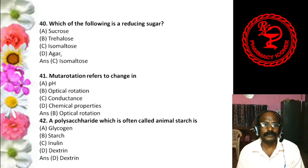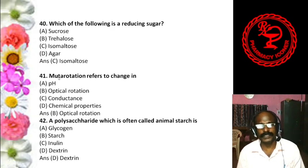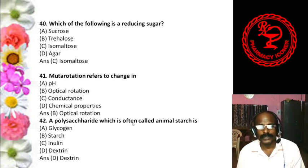Question 4: Triosugar is — A. Glycerose, B. Ribose, C. Erythrose, D. Fructose. The answer is A, Glycerose. Question 5: The pentosugar present mainly in the heart muscle is — Lyxose, Ribose, Arabinose, or Xylose. The answer is Lyxose. Very important: the heart muscle contains lyxose.